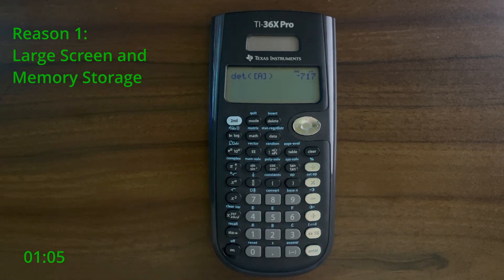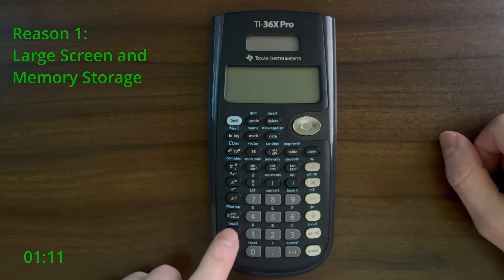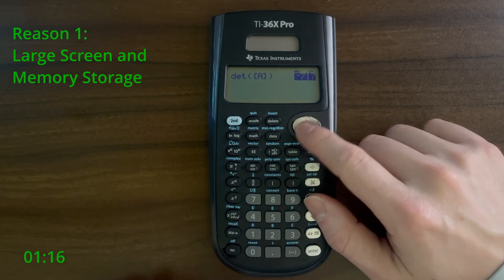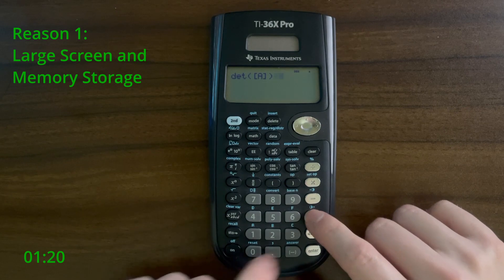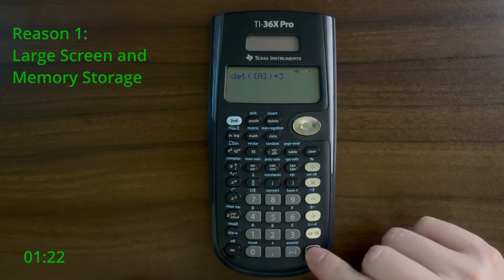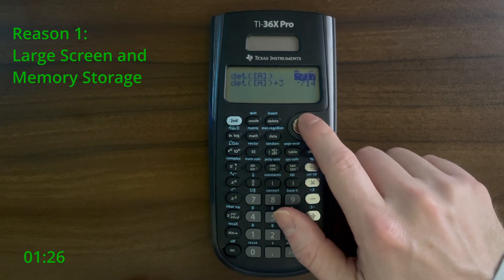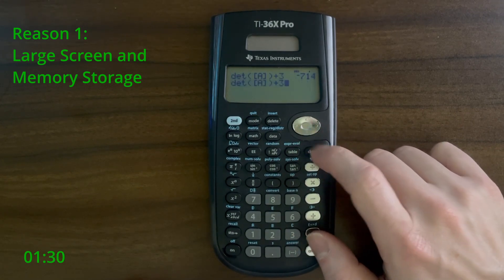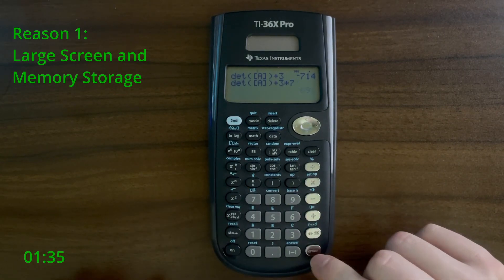Compared to its predecessor, the TI-36X Solar, as well as some competitors, the TI-36X Pro has a larger screen that can show more than one calculation at a time. This is useful because the TI-36X Pro also has built-in memory. This lets the user store and retrieve previous equations and answers in case you want to view them later or make edits to them after entering them. Memory is also stored even after you turn the calculator off.